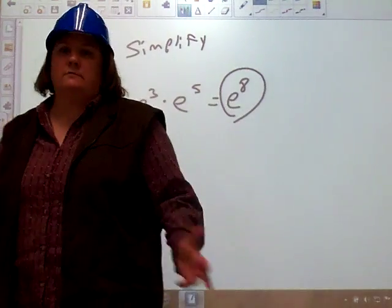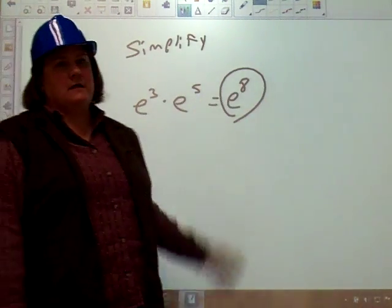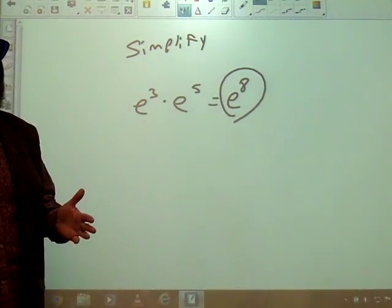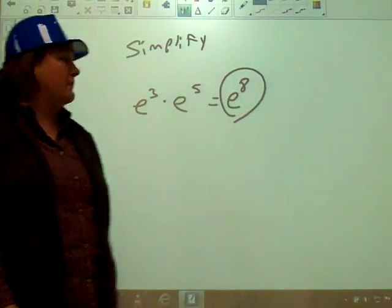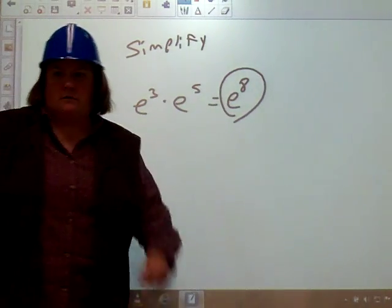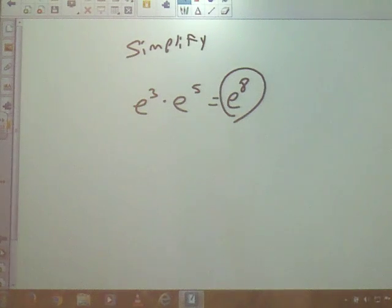Now talking about logarithms and such, we know that e is actually a number, so we could compute that and get an approximate answer, but it would not be exact because e is irrational and keeps going forever. So we're just going to leave that as e to the eighth. There you go.